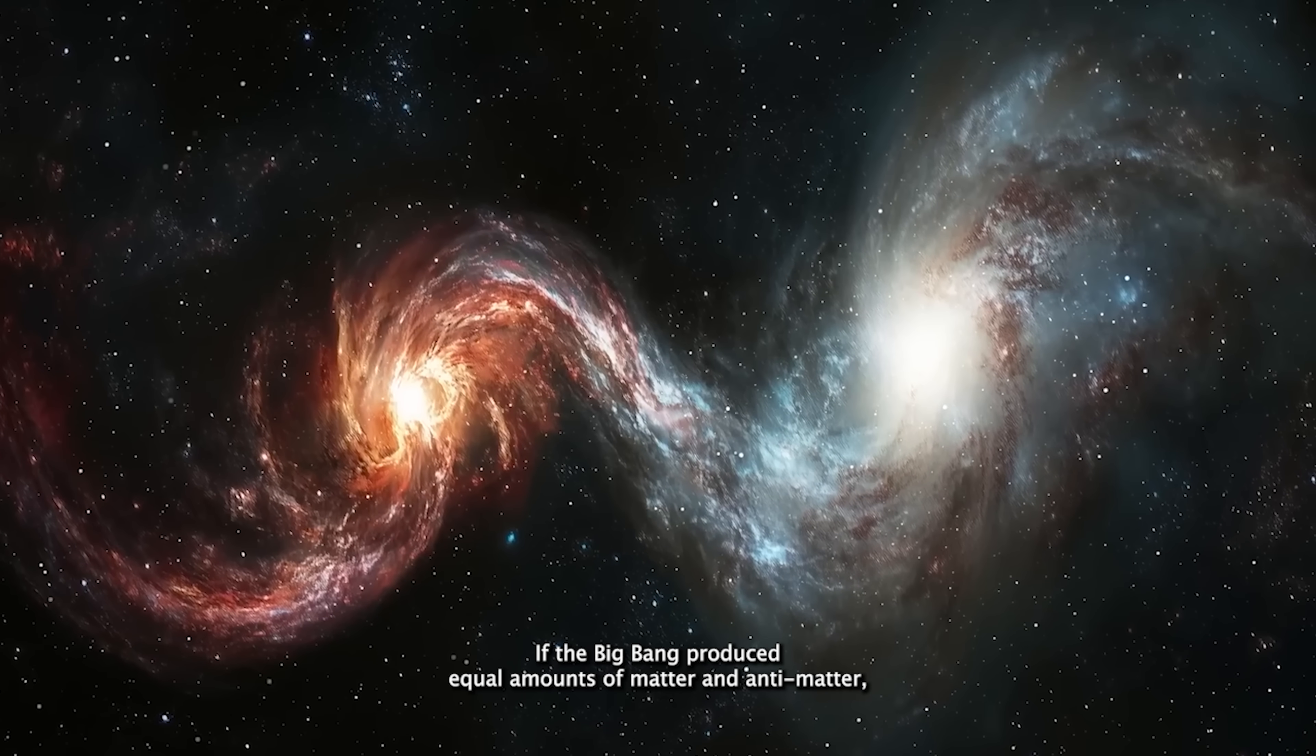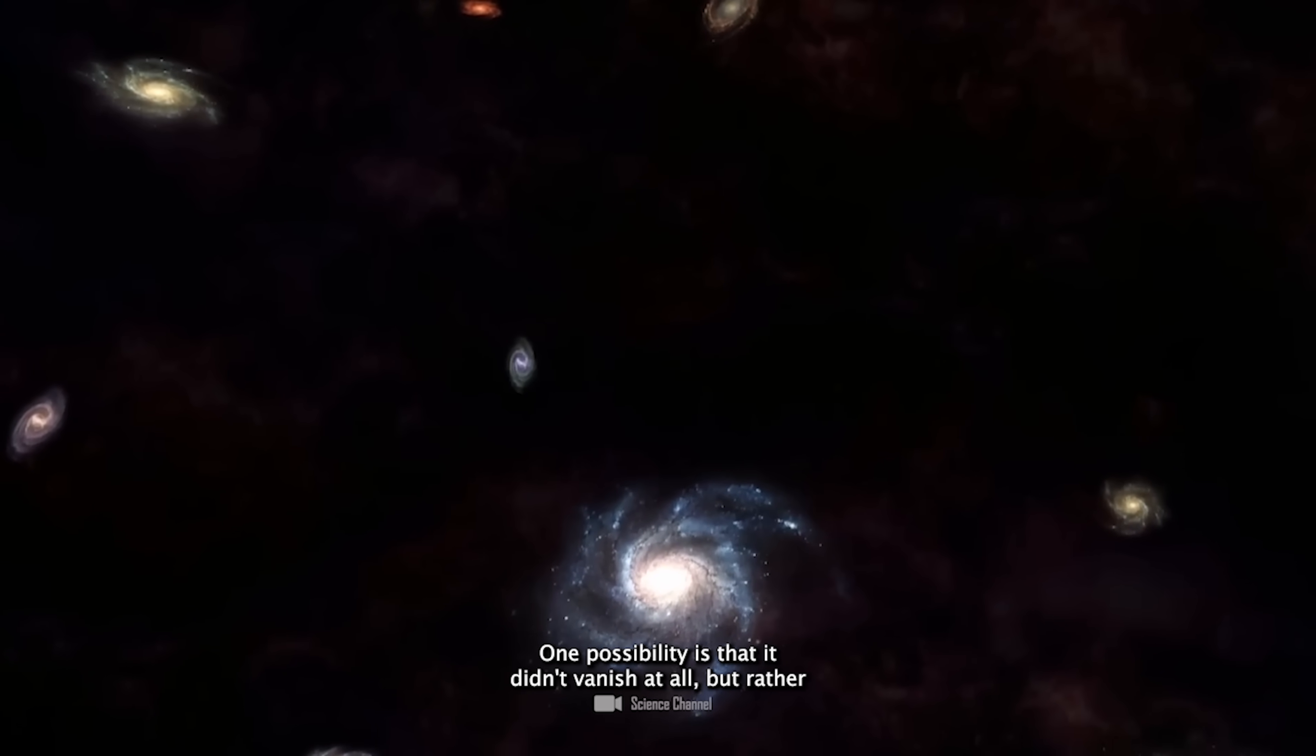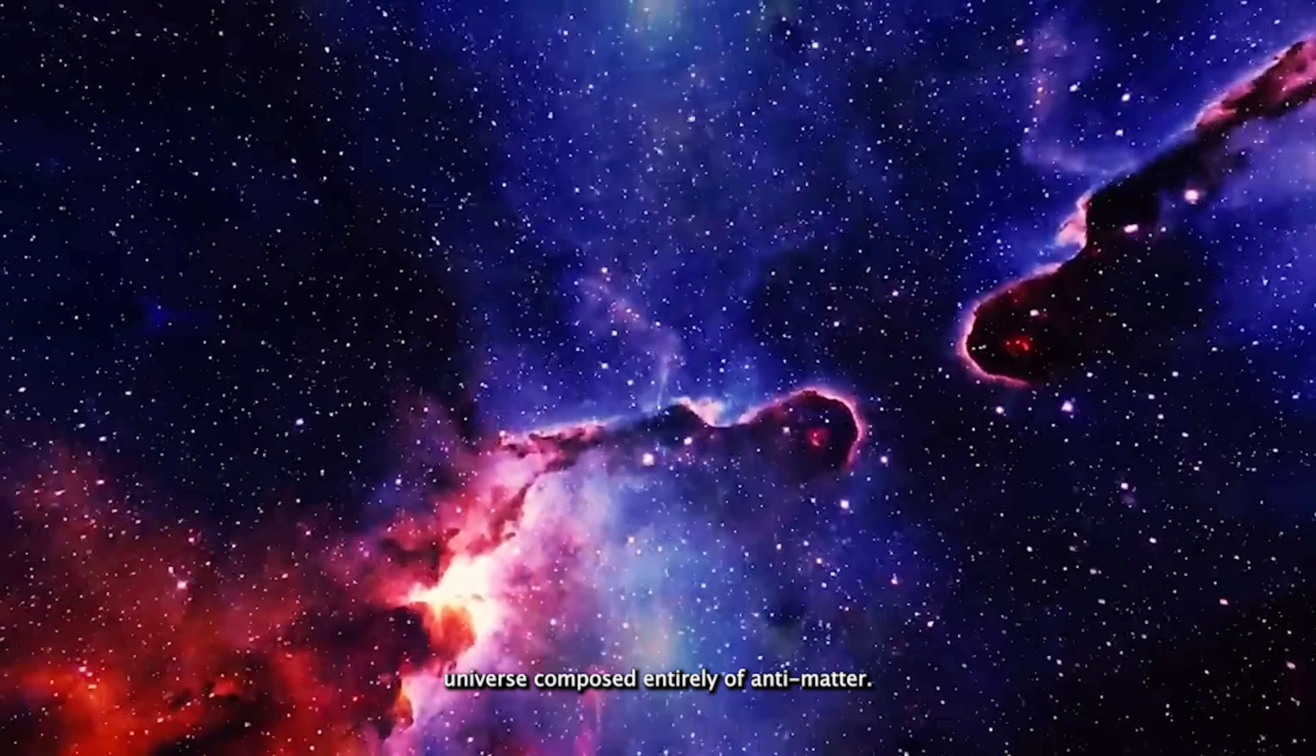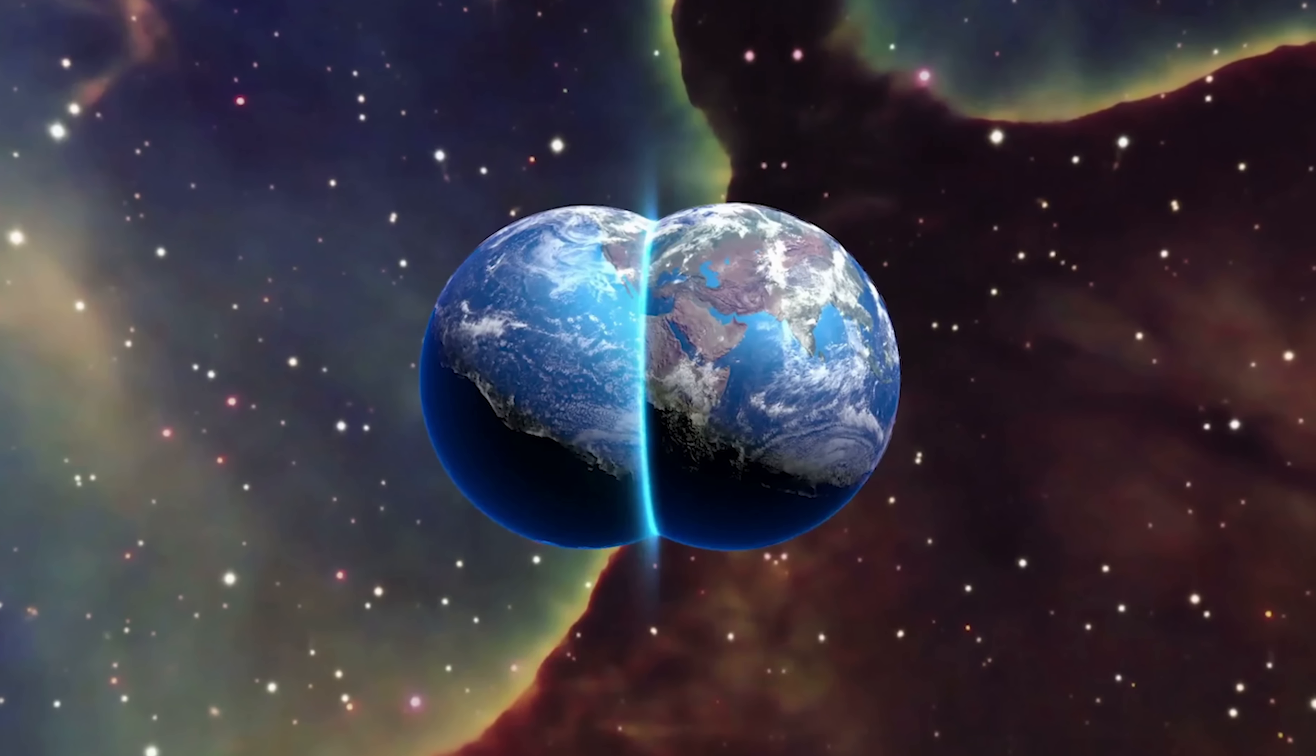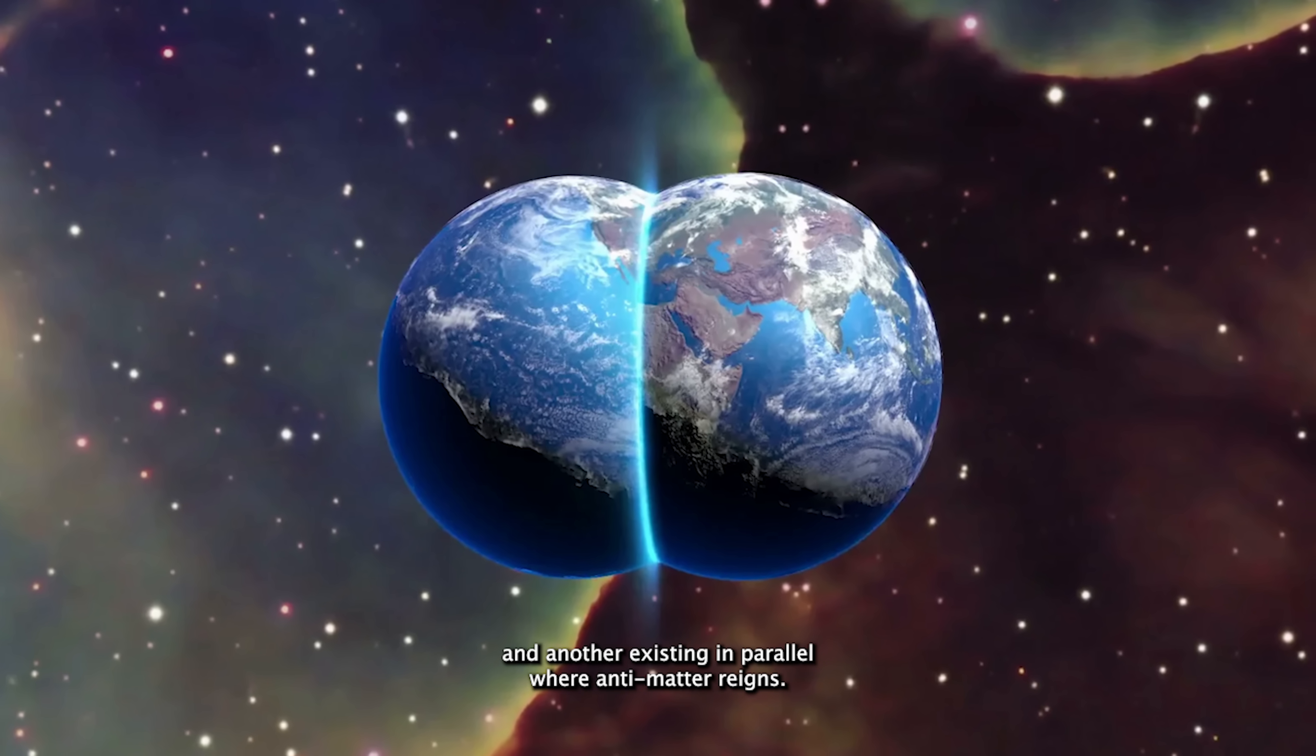If the Big Bang produced equal amounts of matter and antimatter, then where did all the antimatter go? One possibility is that it didn't vanish at all, but rather split off, forming a parallel mirror universe composed entirely of antimatter. In this scenario, the cosmos may have bifurcated at its birth, creating two symmetrical realities: one dominated by matter, ours, and another existing in parallel, where antimatter reigns.